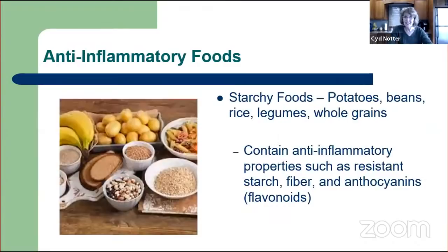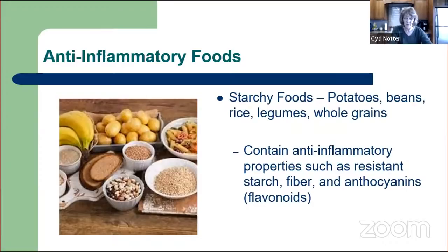Enough of the bad news. Let's move on to the good news: the anti-inflammatory foods, which are starchy foods like potatoes, beans, rice, legumes, and whole grains. These foods are anti-inflammatory because they contain resistant starch, fiber, and anthocyanins. Remember how saturated fat is the most pro-inflammatory food component? Well, fiber is the most anti-inflammatory food component. Beans are an especially great source because they've got folic acid, antioxidants, and they're really high in fiber.